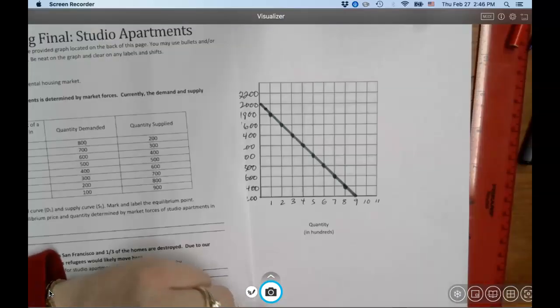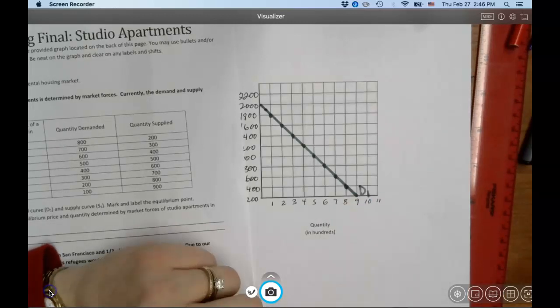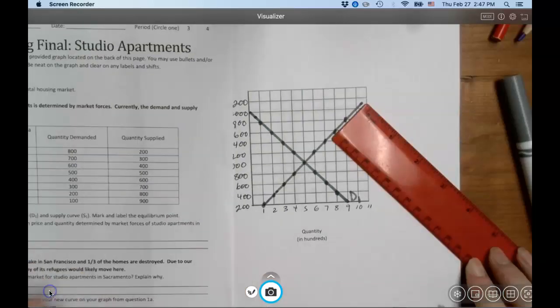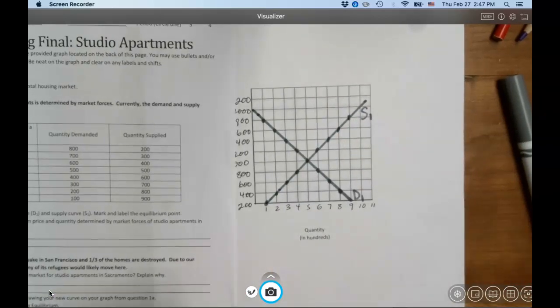Does your curve look like this? What are you supposed to label this? Okay, hopefully you have D1. Hopefully your supply curve looks like this, and what should you label it? S1.